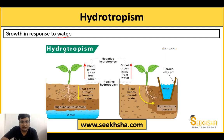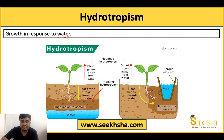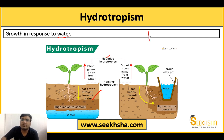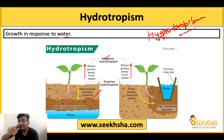Hydrotropism means growth in response to water or moisture. It can also be positive or negative. Roots grow downward toward water — that is positive hydrotropism. The shoot growing away from water would be negative hydrotropism. Hydrotropism is specifically the movement or growth of the plant in response to water or moisture direction.